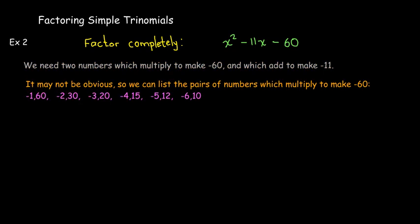But if you get stuck, you start by listing the pairs of numbers that multiply to make negative 60. One has to be negative and one has to be positive. Here is a list of pairs that multiply to make negative 60. Do any of these pairs add to make negative 11? The answer is no.